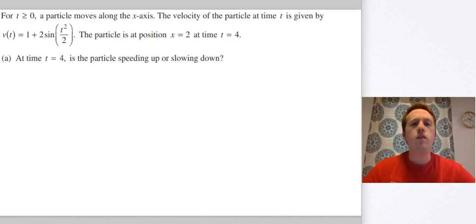Let's just do it. More often than not you're given a question that only has one particle, but there are rare instances where they give you information about two different particles, in which case just be very careful about which particle you're talking about. All right, for t ≥ 0, a particle moves along the x-axis. The velocity of the particle at time t is given by v(t) = 1 + 2sin(t²/2). The particle is at position x = 2 at time t = 4. Okay, so this one is a calculator question.